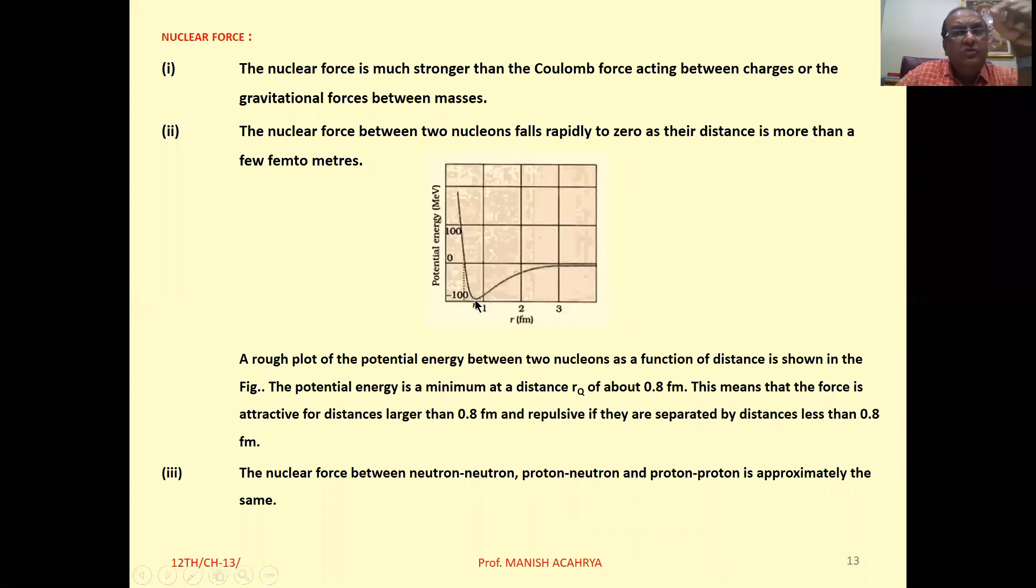And we know this thing: force F is minus dU by dx. The negative of the rate of change of potential energy with respect to distance gives you force. So at 0.8 Fermi distance increased.